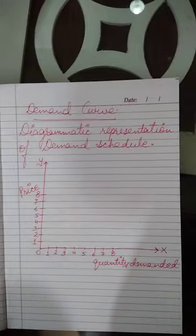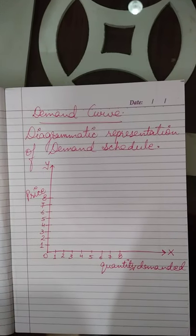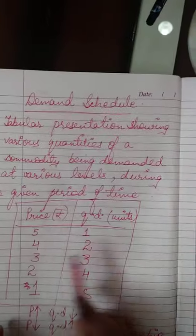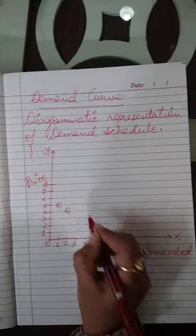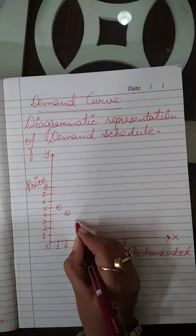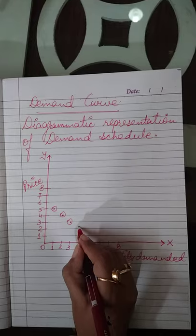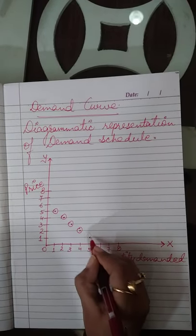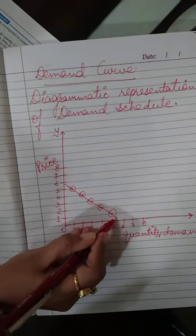When price was ₹5, demand was 1 unit. Price ₹4 — demand 2 units. Price ₹3 — demand 3 units. Price ₹2 — demand 4 units. Price ₹1 — demand 5 units। तो यह जो curve जा रहा है, that is your demand curve।